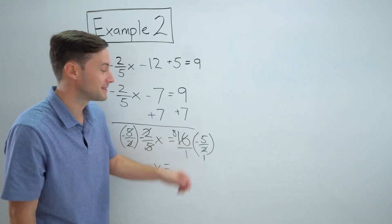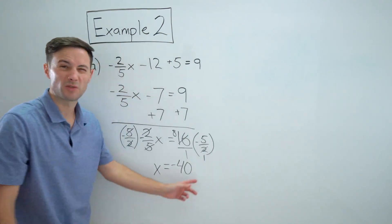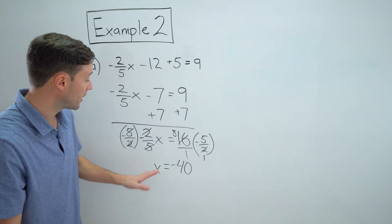And then eight times negative five is negative 40. One times one is just one. I don't really need that. So x is negative 40.